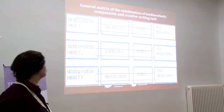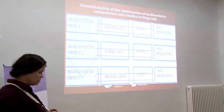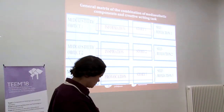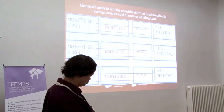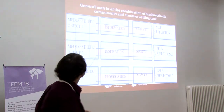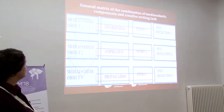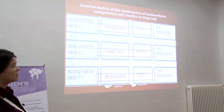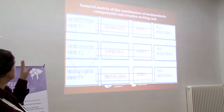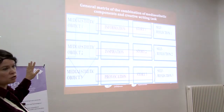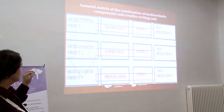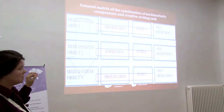That is why we can use it in other courses also. The matrix is that I can divide all media aesthetic objects into three groups, according to these codes: information, inspiration, and provocation.